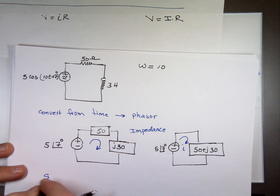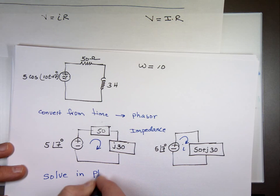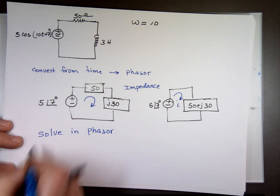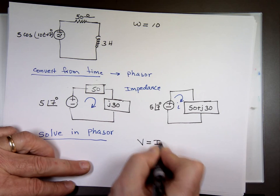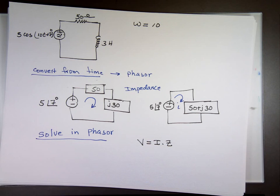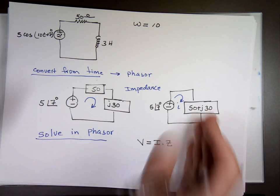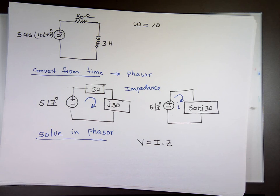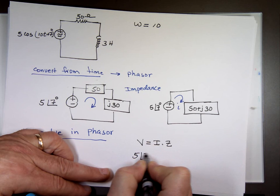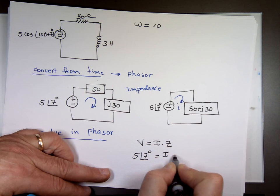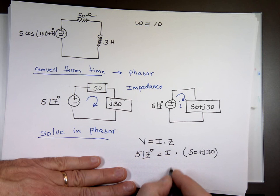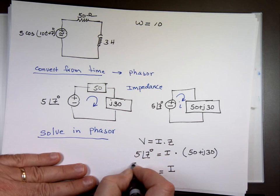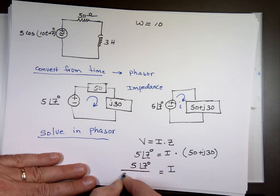Now let's solve it in phasor. How would you solve for the current here in phasor? If this was a voltage source and that's a resistor, what method would you use? Ohm's law. V equals I times R, or in this case, I times Z. Impedance. We use Z for impedance. They're not really resistors. It's an impedance, complex value. The voltage is 5 angle 7. The current I'm looking for, and the impedance for the circuit is what? 50 plus j30. Can we find I? 5 angle 7 over 50 plus j30.